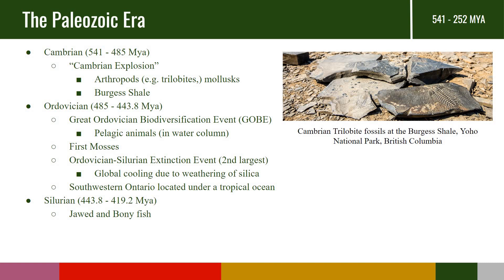Some of these include arthropods, which of course included trilobites, which are now extinct, but also things like mollusks. You can see great trilobite and other Cambrian fossils in the Burgess Shale, which can be found in Yoho National Park in British Columbia's Rocky Mountains.